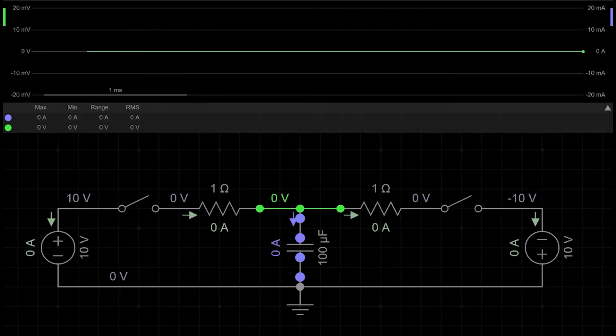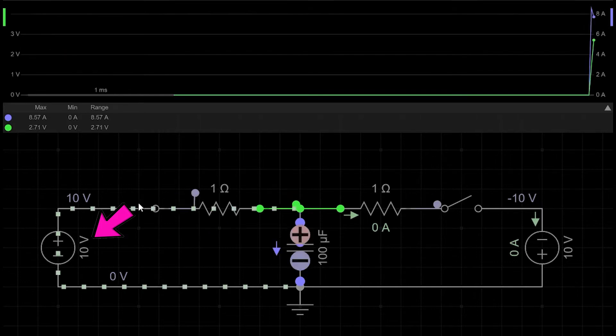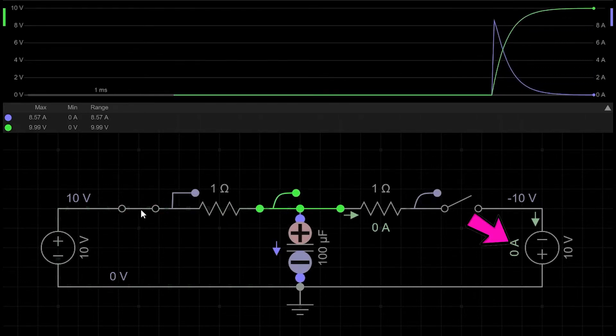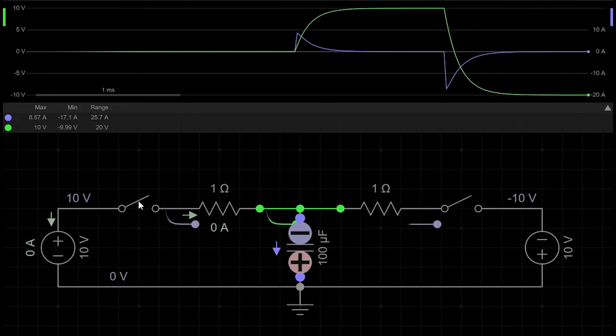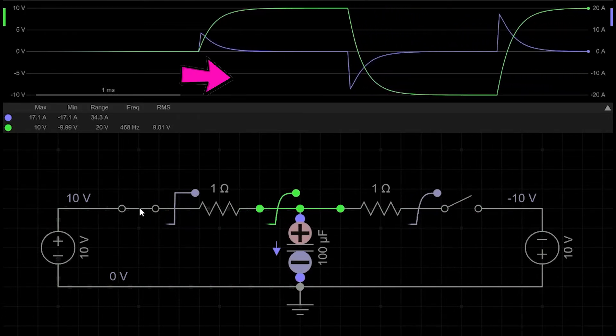So let's again charge the capacitor with the DC voltage source, but this time, after it charges, we will connect it to a second voltage source that is opposite to the first, and repeat this process. What is happening now? Current is flowing in both directions through a capacitor.